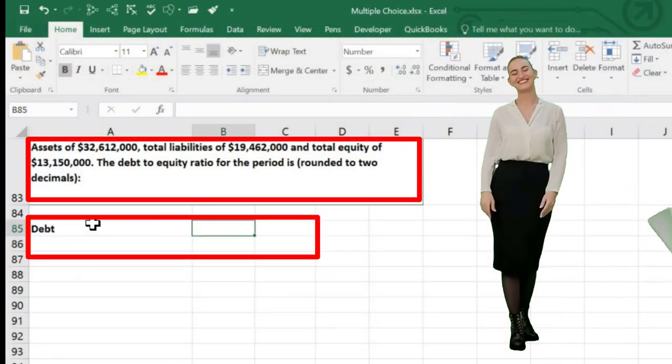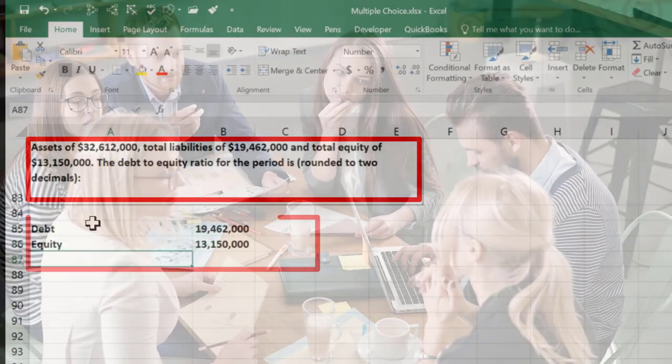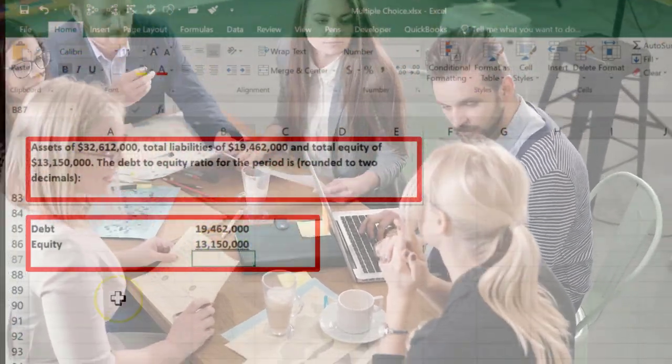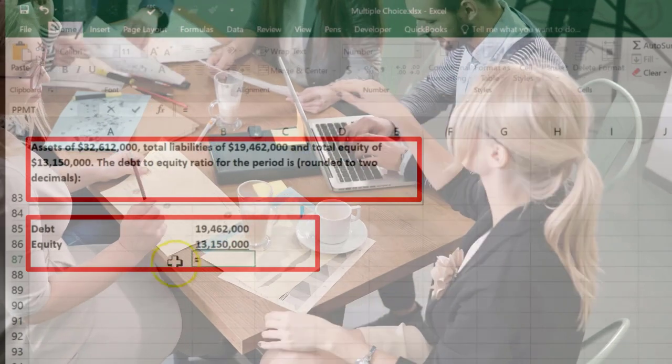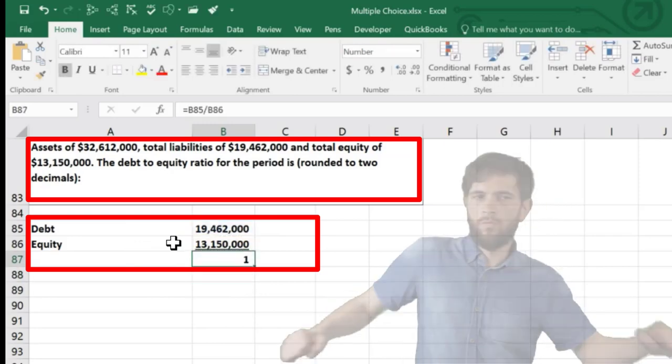So we're going to say the debt equals the liabilities of $19,462,000, and the equity is going to be this $13,150,000. If we divide those out, I'm going to underline, Home tab, Font, Underline, and we're going to compare the debt, the $19,462,000, divided by, ratio, the equity, $13,150,000. And we come up not to